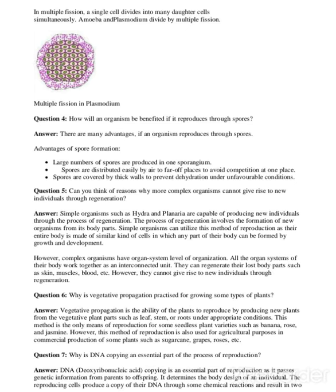Sixth question: why is vegetative propagation practiced for growing some types of plants? This is indirectly about the advantages of vegetative propagation. Mainly, when plants are not able to produce seeds, we can use this method. Seedless plants can be multiplied easily, and for commercial production you can produce more plants this way. For example, sugarcane and grapes are easily multiplied by cutting, without seeds, so multiplication is faster.